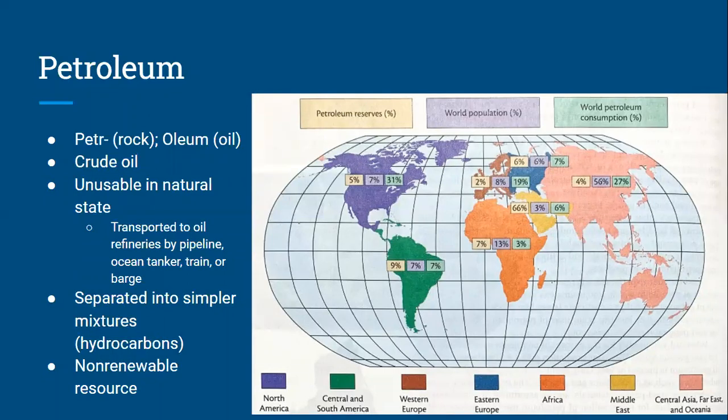At the oil refinery, the crude oil or petroleum is separated into simpler mixtures of hydrocarbons. Because petroleum cannot be readily replenished by natural processes, it's considered a non-renewable resource. So we have to consider what reserves are available and relate that to our consumption.